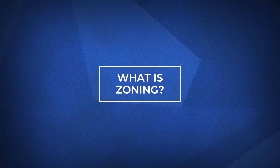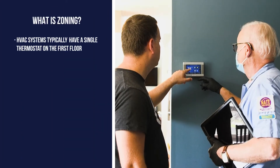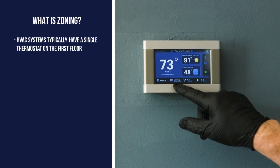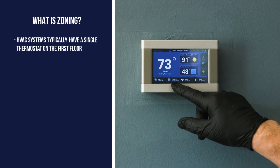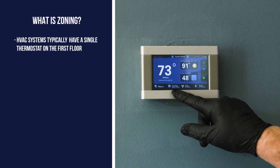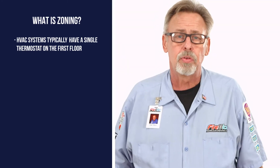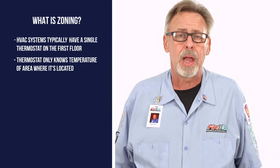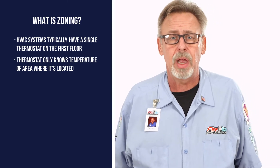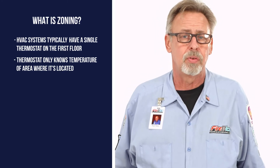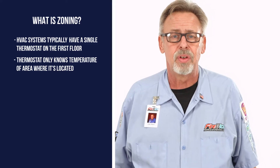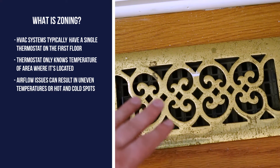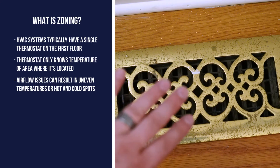Most conventional HVAC systems have a single thermostat located on the first floor. When the thermostat calls for heating or cooling, the system will kick on to reach the temperature setting. The problem is your thermostat may think it's 72 degrees, but the back bedroom may be 80 or even 20 degrees different. The thermostat doesn't know. Airflow issues play a large part in uneven temperatures or hot and cold spots.